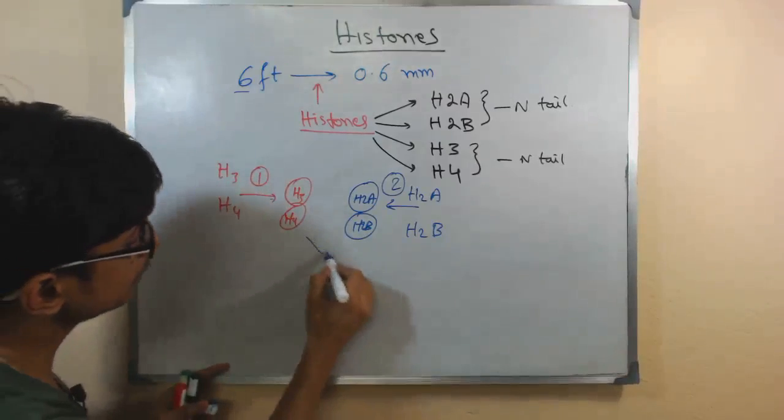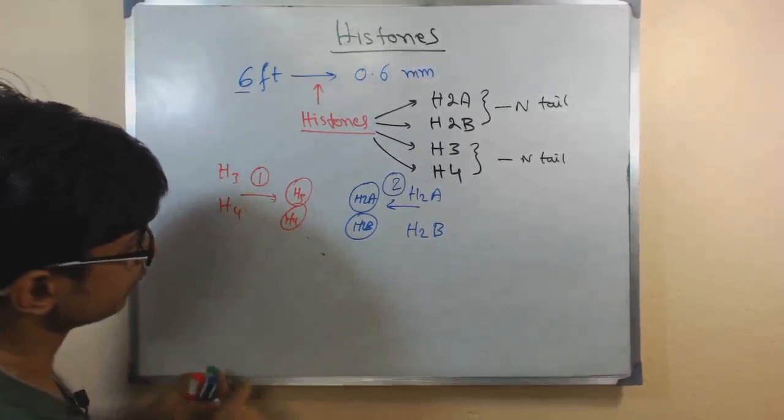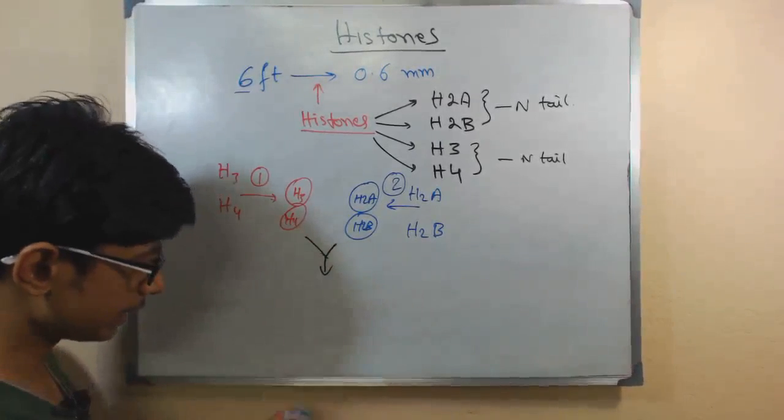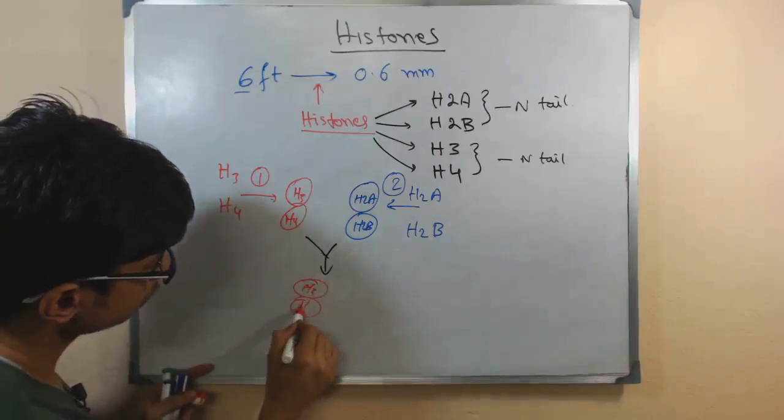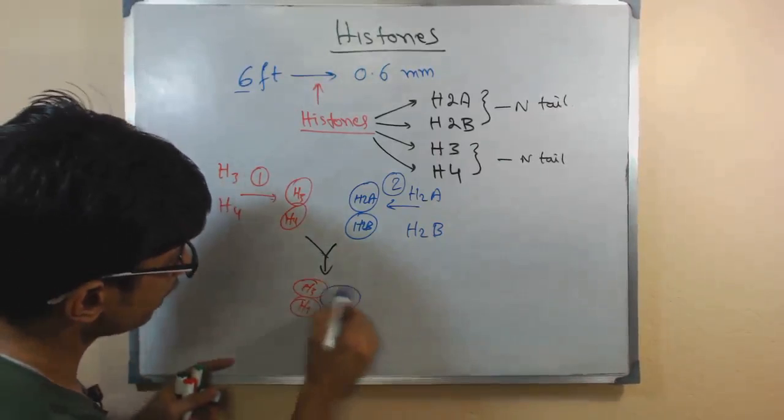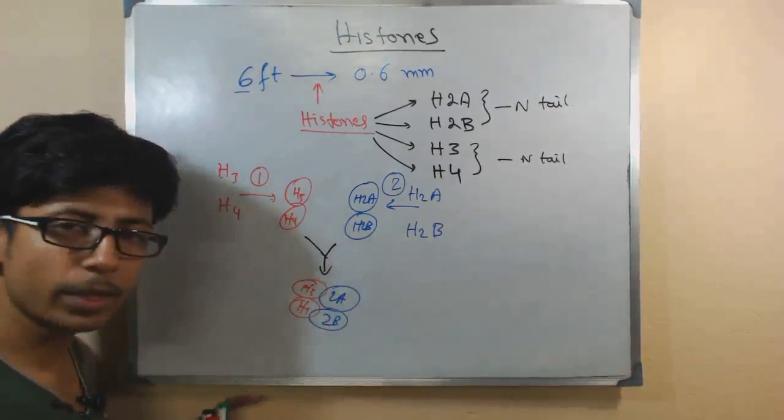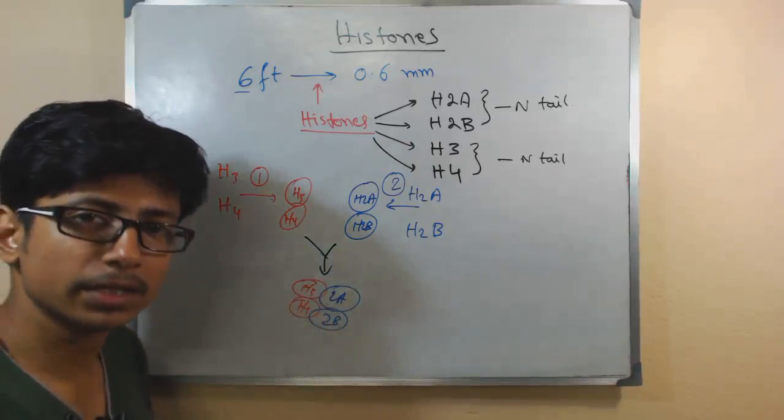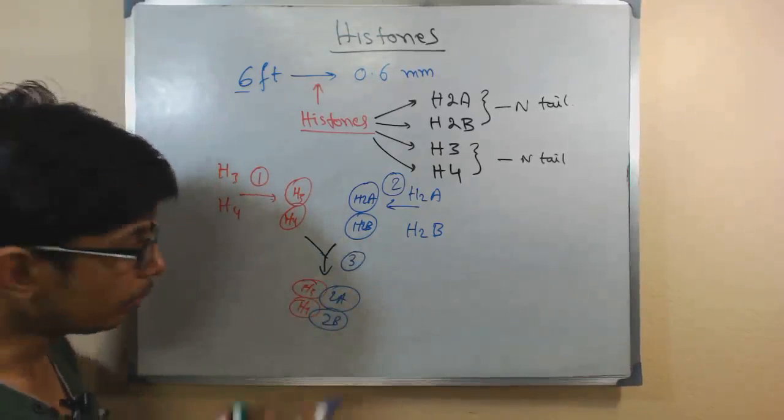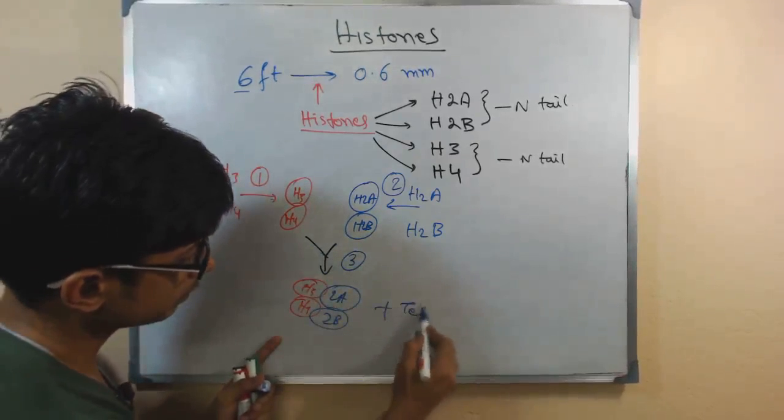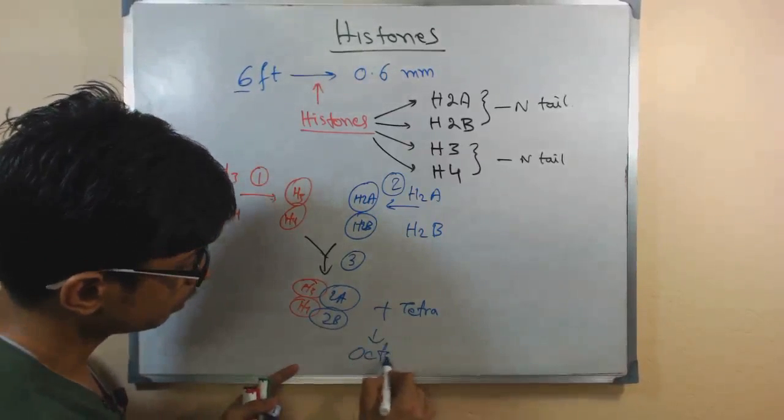Once it is formed, then event number 3 is a combination of these four. What we get here is H3, H4 along with H2A, H2B. So this is a tetramer that is formed. This is event number 3. Once that is done, two of such tetramers combine with themselves to form an octamer.